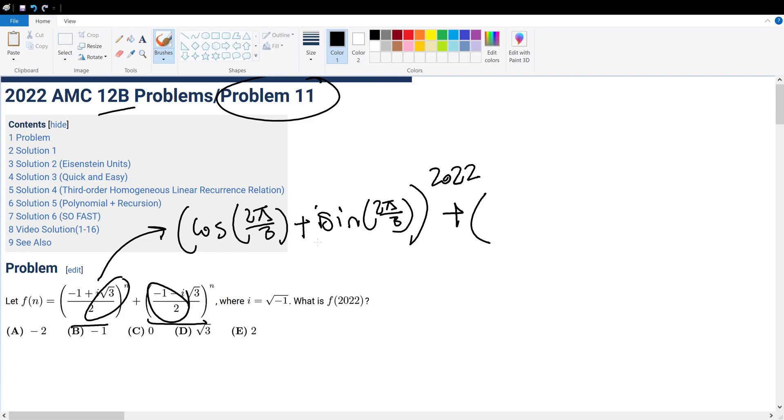we want negative 1 half, so that would be cosine of 4π over 3, plus negative square root of 3 over 2, which will be sine of 4π over 3, because 4π over 3 is in the third quadrant, and sine and cosine in the third quadrant is negative. Okay, cool.